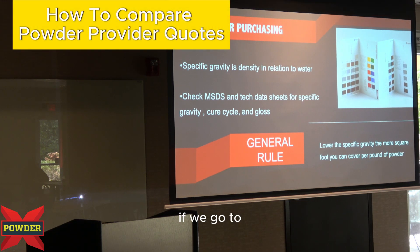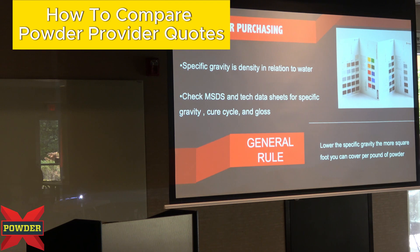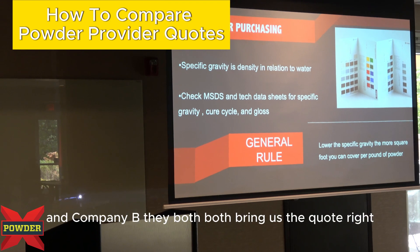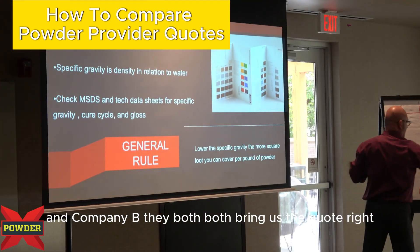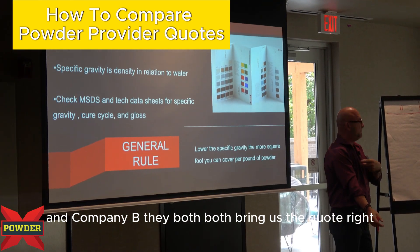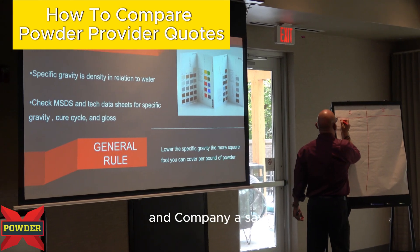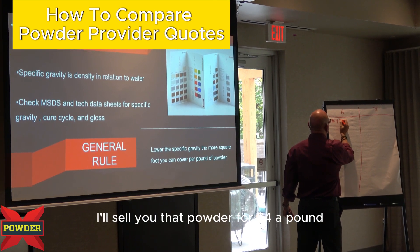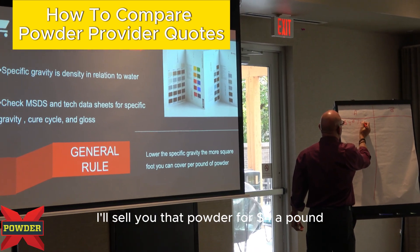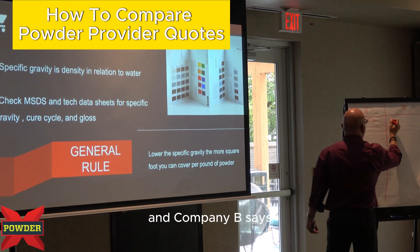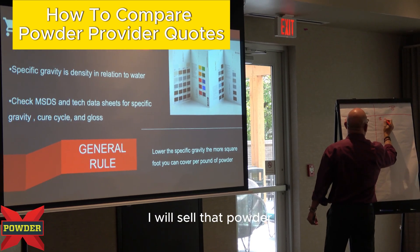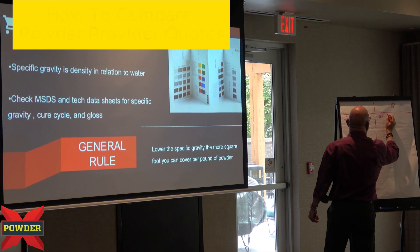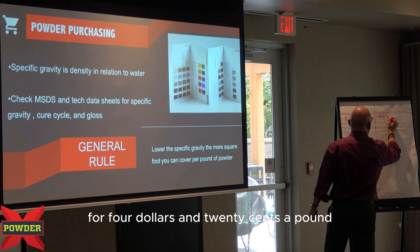If we go to Company A and Company B, they both bring us a quote. Company A says, I'll sell you that powder for $4 a pound. And Company B says, I will sell you that powder for $4.20 a pound.